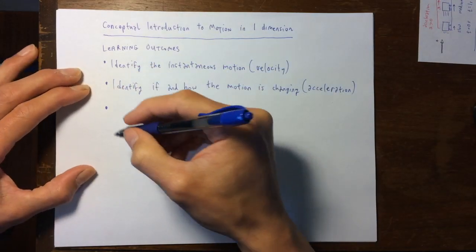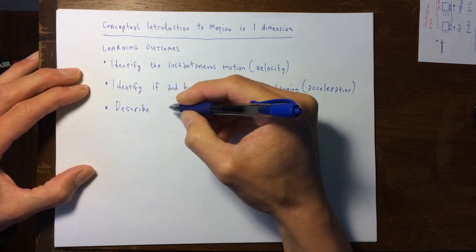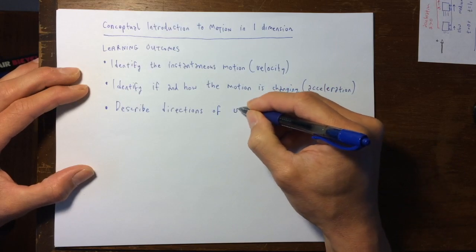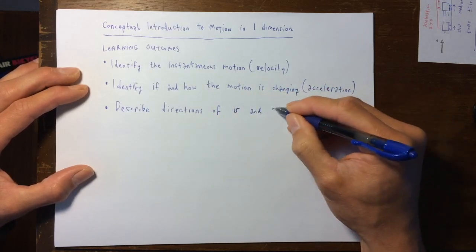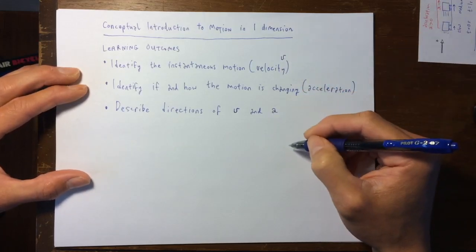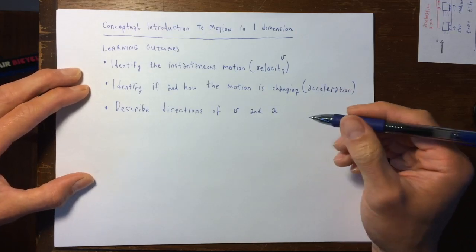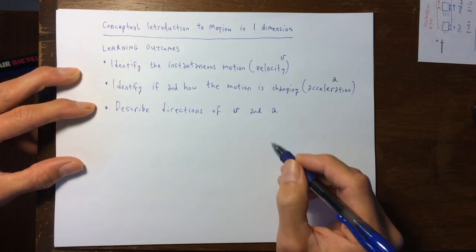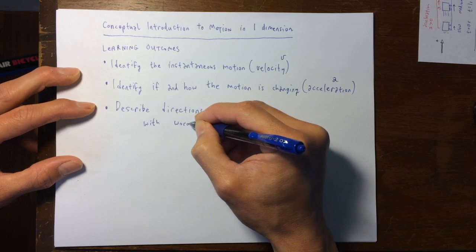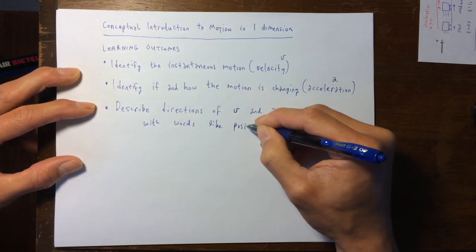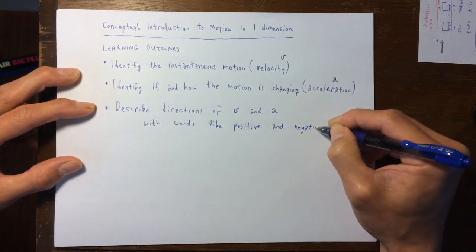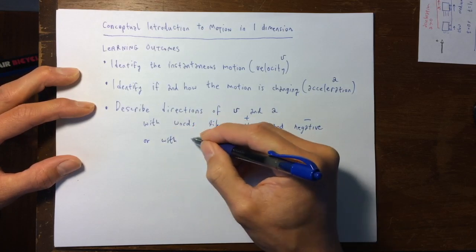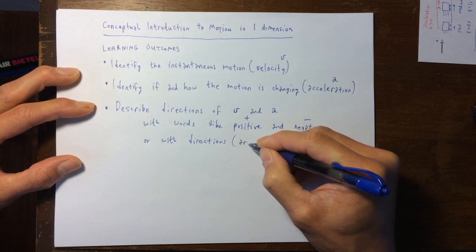And then the third learning outcome: you're going to be able to describe directions of velocity and acceleration. V is the symbol that physicists and mathematicians use for velocity, and A is the symbol for acceleration. We'll describe directions with words like positive and negative — putting a minus sign for negative and a plus sign for positive — or with directional arrows.